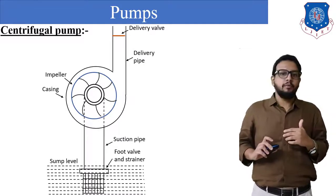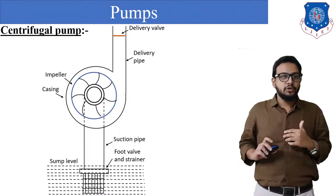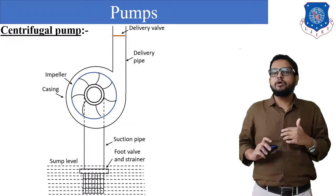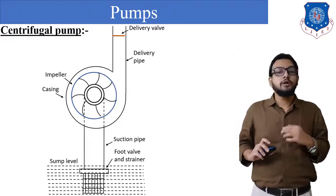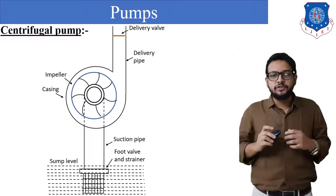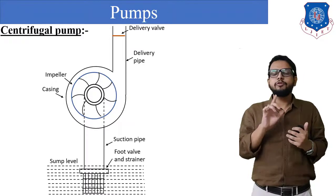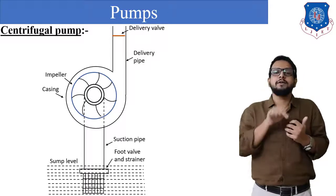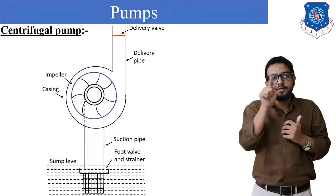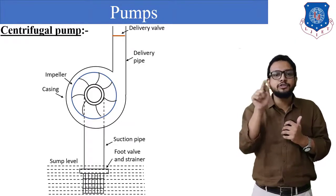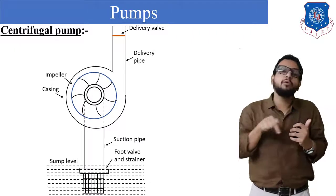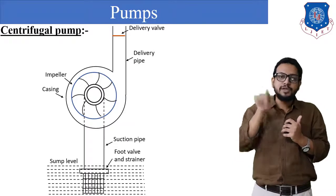Now let us see our next type of pump — the centrifugal pump. As the name suggests, a centrifugal pump operates on centrifugal force, which acts away from the center. Looking at the construction, at the center of the pump there is a circle representing the pump shaft. There is a larger circle with curved blade shapes — those are the impeller blades — and the impeller is mounted on the pump shaft.